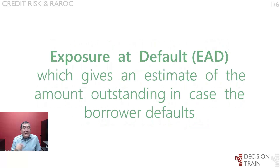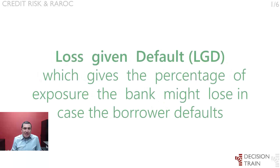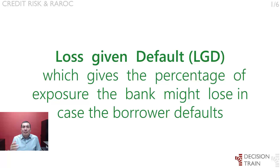Exposure at default, EAD, gives an estimate of the amount outstanding — drawn amounts plus likely future drawdowns of yet undrawn lines — in case the borrower defaults. Loss given default, LGD, gives the percentage of exposure the bank might lose in case the borrower defaults. These losses are usually shown as a percentage of EAD and depend, among others, on the type and amount of collateral as well as the type of borrower and the expected proceeds from the workout of the assets.